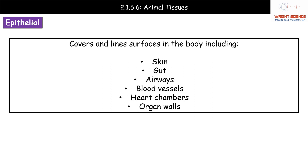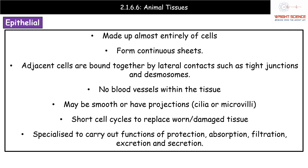Starting with epithelial tissue first. These are the ones that cover and line various surfaces inside the body — things like your skin, your gut, the airways, etc. The key features of epithelial tissue: it's made up almost entirely of cells forming continuous sheets. Adjacent cells are bound together by tight junctions and desmosomes — little contact points between cells that hold them together. There are no blood vessels within the tissue itself, and there are different types, including smooth and those with projections.